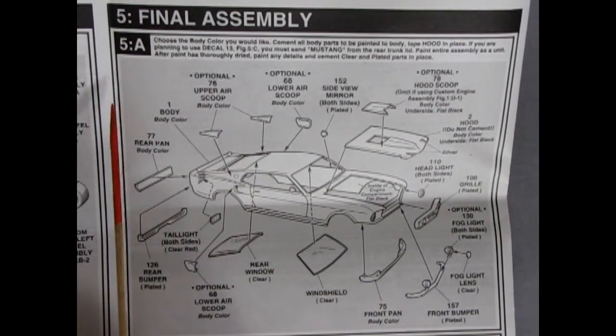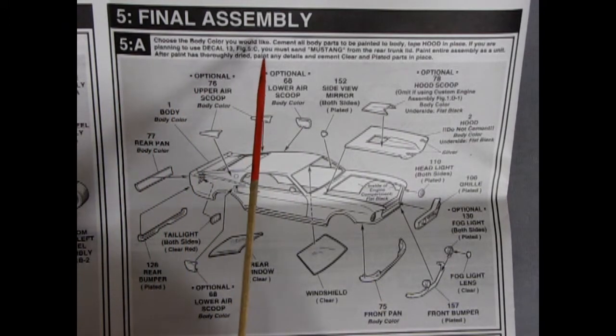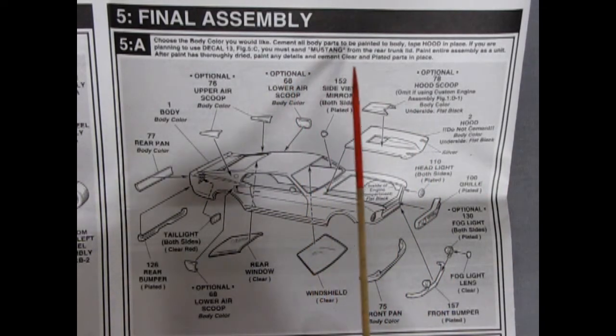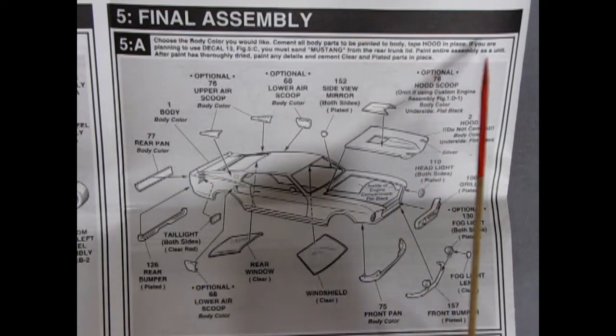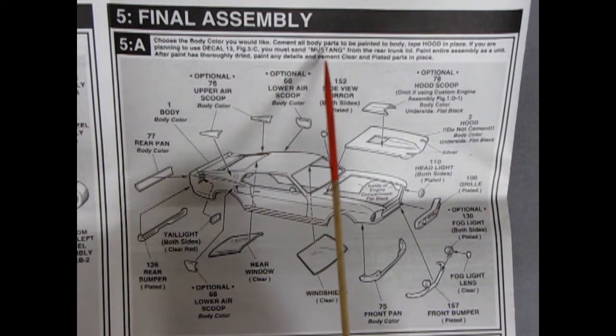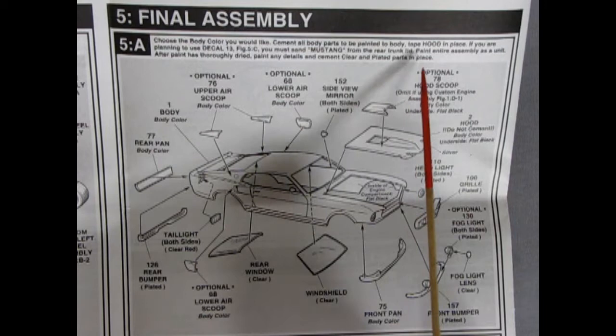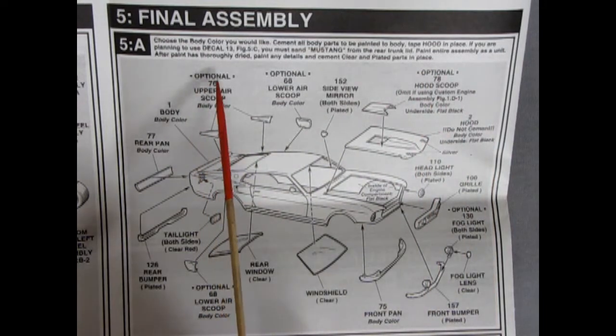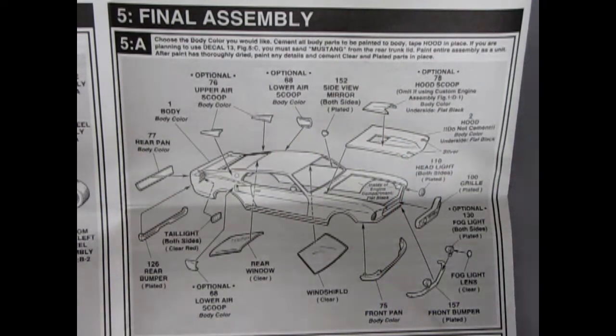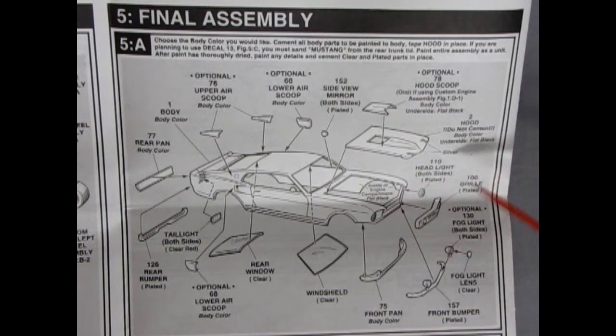And here we get the final assembly in 5A. It says, choose the body color you would like. Unfortunately, it doesn't tell you what Mustang body colors were back then. Anyway, cement all body parts to be painted to body, tape hood in place. If you're planning to use Decal 13, figure 5C, you must sand Mustang from the rear trunk lid. Good to know. Paint entire assembly as a unit. After painting has thoroughly dried, paint any details in cement, clear and plated parts in place. So there's a lot going on here, but not all that much. There's our grill going in, the headlights on both sides, the front body pan glues underneath here.